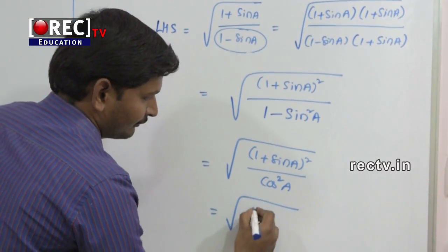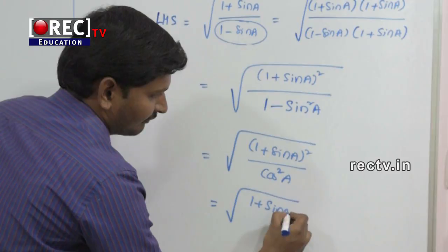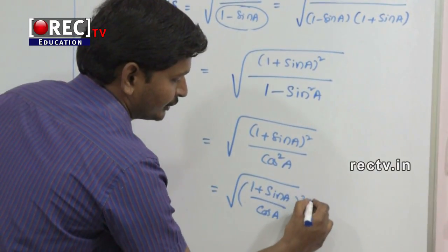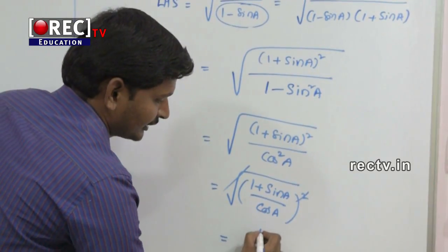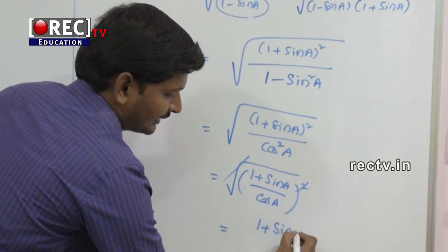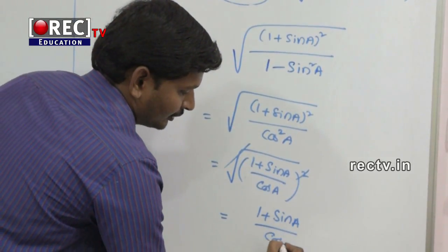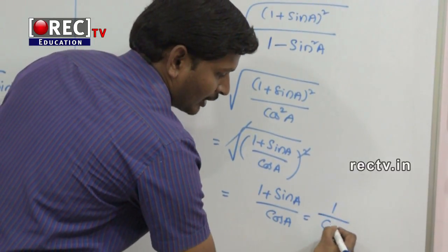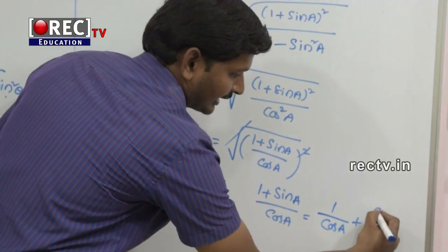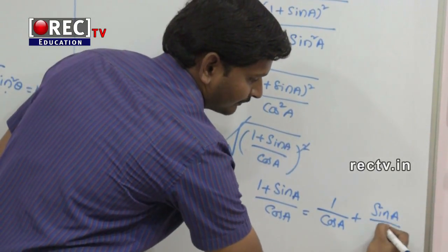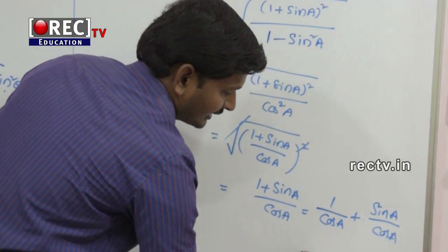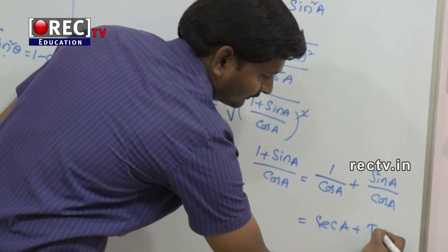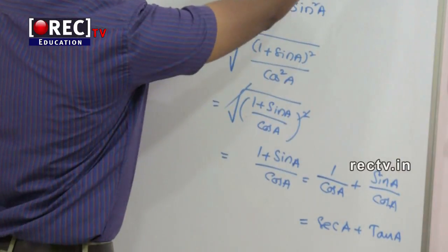That is equal to square root of 1 plus sin a divided by cos a, whole squared. The square and square root cancel, giving 1 plus sin a divided by cos a. Separating the terms: 1 by cos a plus sin a divided by cos a. Now, 1 by cos a is nothing but secant a, and sin a divided by cos a is tan a. So this equals secant a plus tan a, which is the RHS.